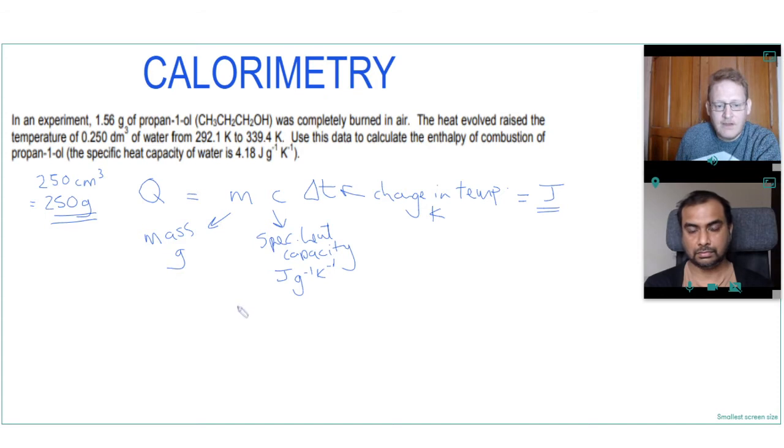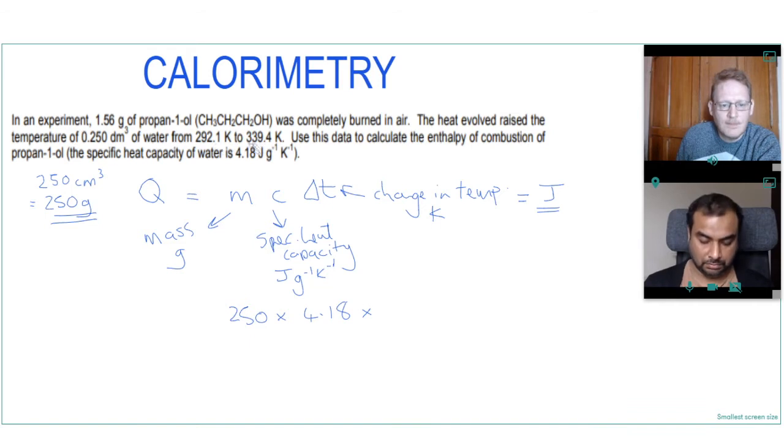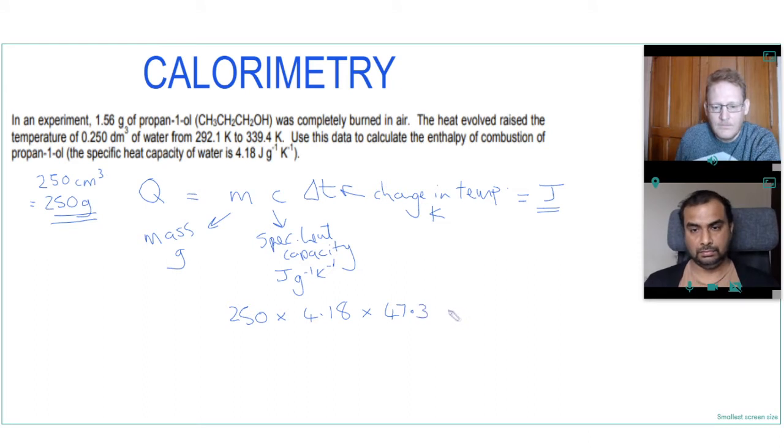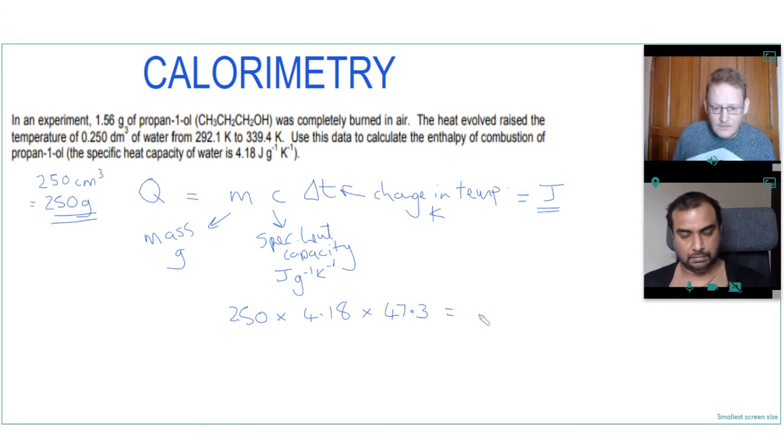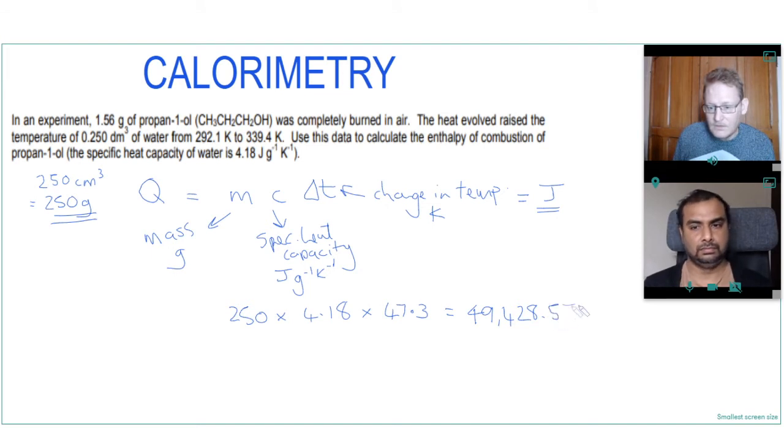So now we can put that in our equation so Q will equal 250 times the specific heat capacity of water which is 4.18 times the temperature change of the water which from 292.1 to 339.4 looks to me 47.3, and then we times that together, we get 49,428.5 joules.